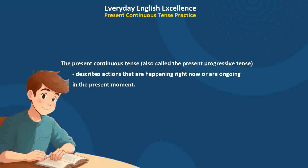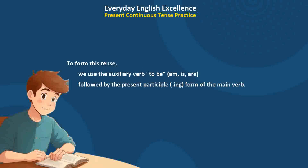The present continuous tense, also called the present progressive tense, describes actions that are happening right now or are ongoing in the present moment. To form this tense, we use the auxiliary verb 'to be' — am, is, are — followed by the present participle (-ing) form of the main verb.